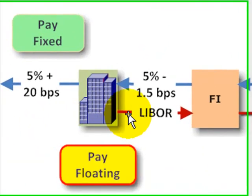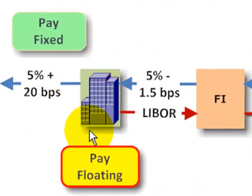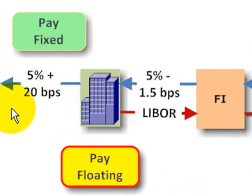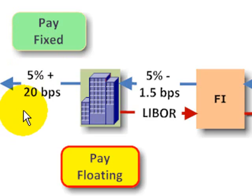To illustrate, consider company A. Before the swap, they are paying a fixed rate obligation. Maybe they've issued a corporate bond that requires them to pay as interest 5% plus 20 basis points. So before the swap, they are paying on a fixed rate obligation.